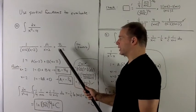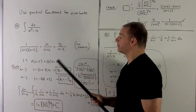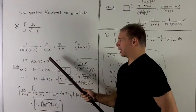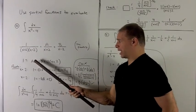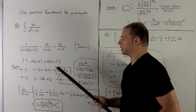So here we only have two factors, so I only need two constants, A and B. We clear the denominator, so it's going to leave me with 1 equals A times x minus 2, plus B times x plus 2.